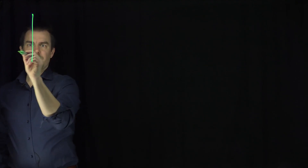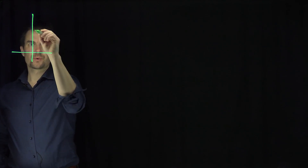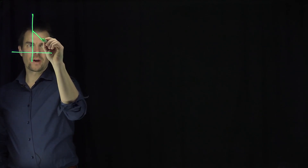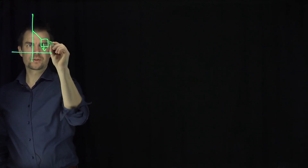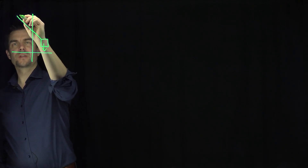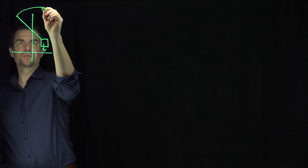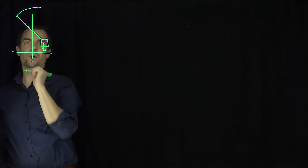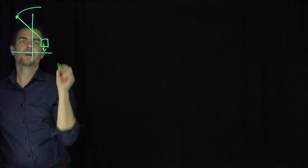Hello students. In this video we'll solve an optimization problem involving a trebuchet. A trebuchet is basically a catapult where there's a counterweight. A counterweight comes down, and then a sling comes out and it launches a projectile. So that's basically what a trebuchet does.